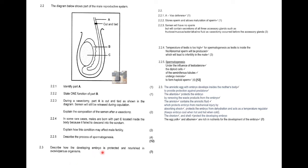Question 2.3: how is the developing embryo protected and nourished in an ovoviviparous organism, for seven marks? For protection: the amniotic egg develops inside the mother's body, providing protection against predators. The allantois protects the embryo by removing wastes. The amnion contains amniotic fluid which protects from mechanical injury by absorbing shock, protects from dehydration, and acts as a temperature regulator. The chorion and shell also protect the developing embryo. For nourishment: the egg yolk and albumen are rich in nutrients for the development of the embryo.